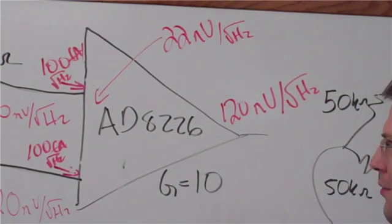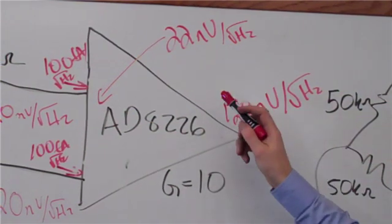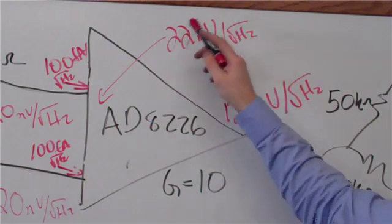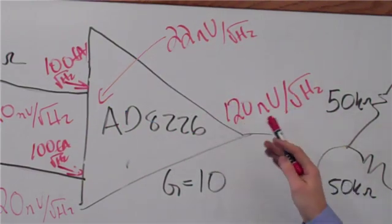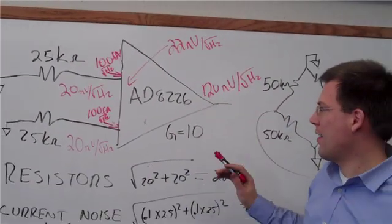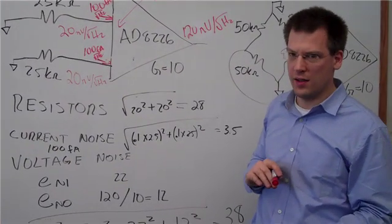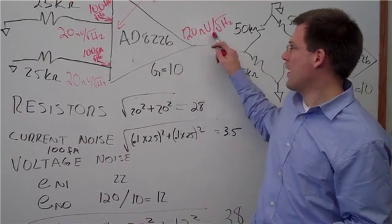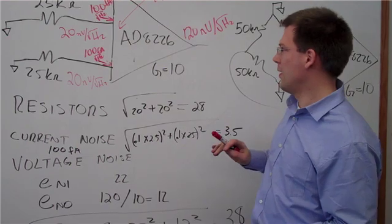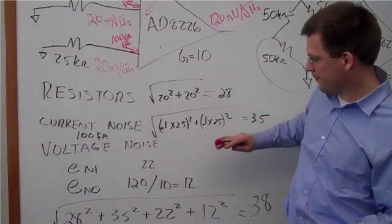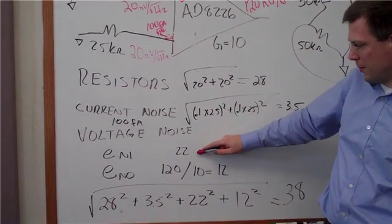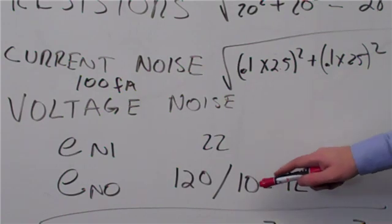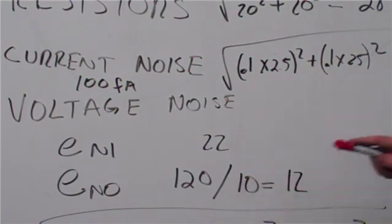The funny thing about instrumentation amplifiers is this noise changes with the gain. When we're talking about input referred, this noise stays constant and this noise goes down with the gain. In our circuit we're going to use a gain of 10 for this instrumentation amplifier. So we're going to take this 120 nanovolts per root hertz and divide by 10. Our input voltage noise is 22, and this ENO becomes 12 because we divide by the gain.